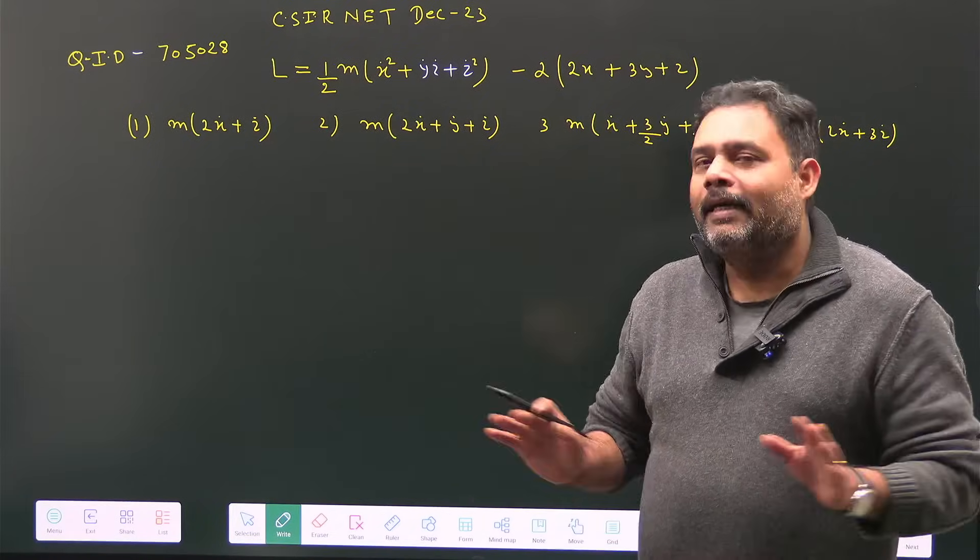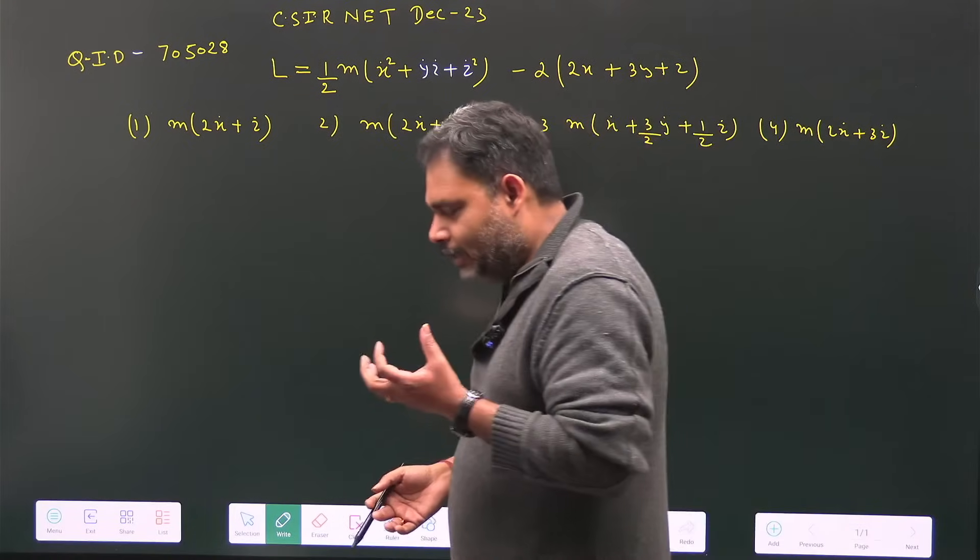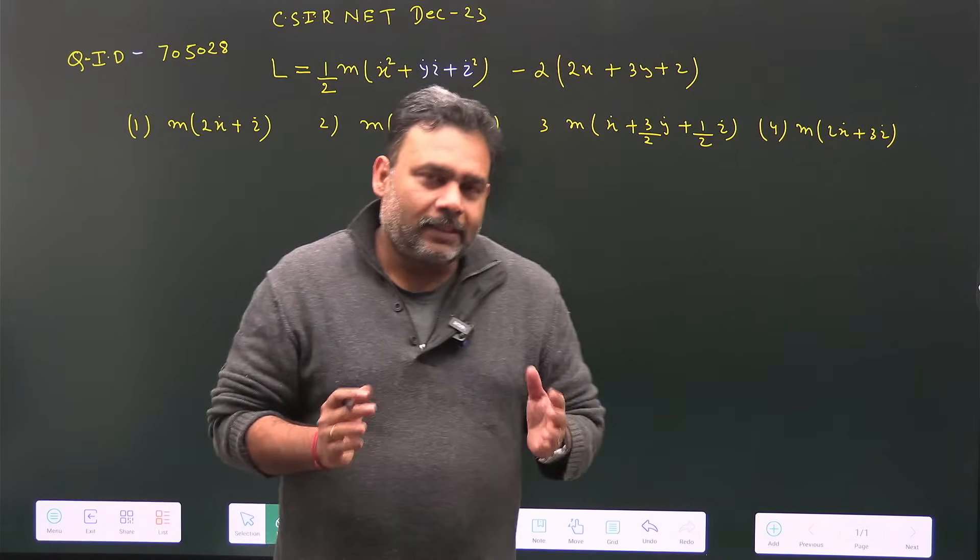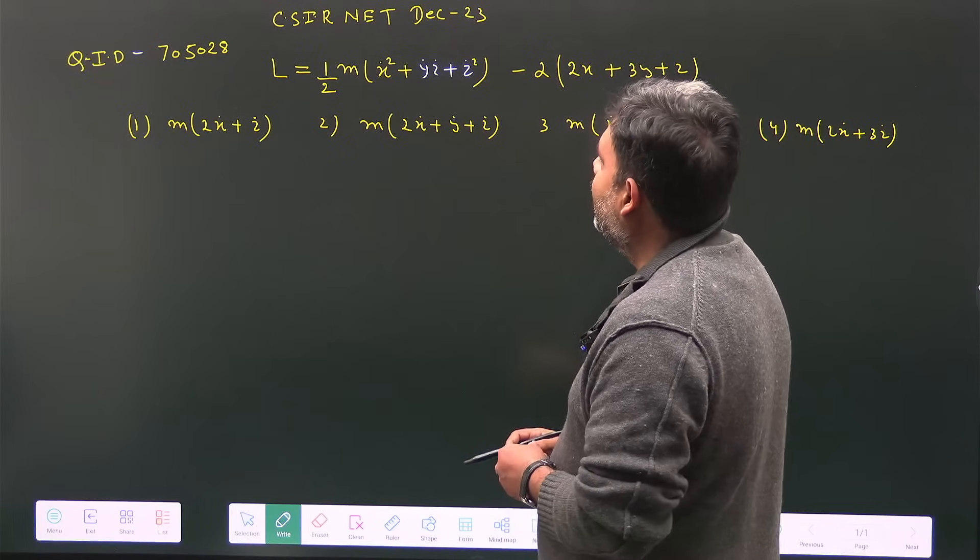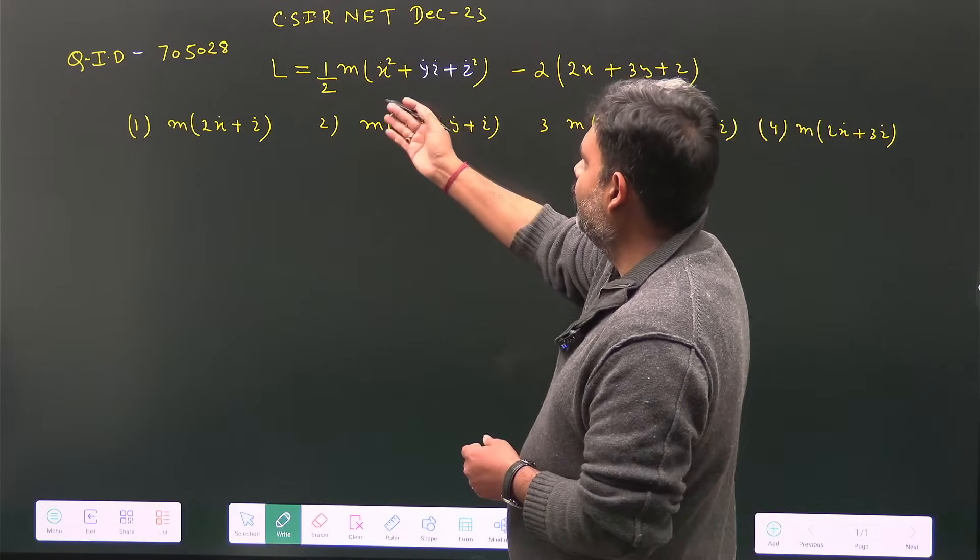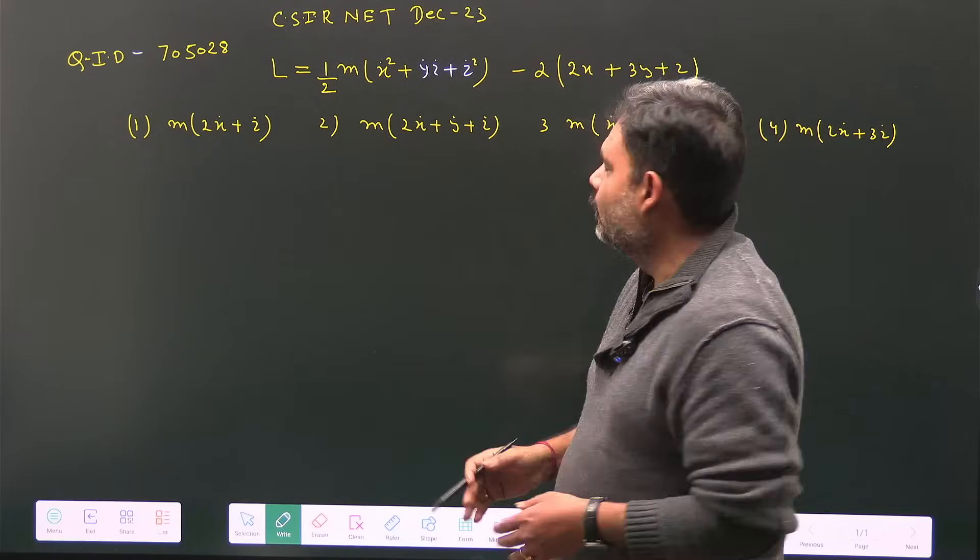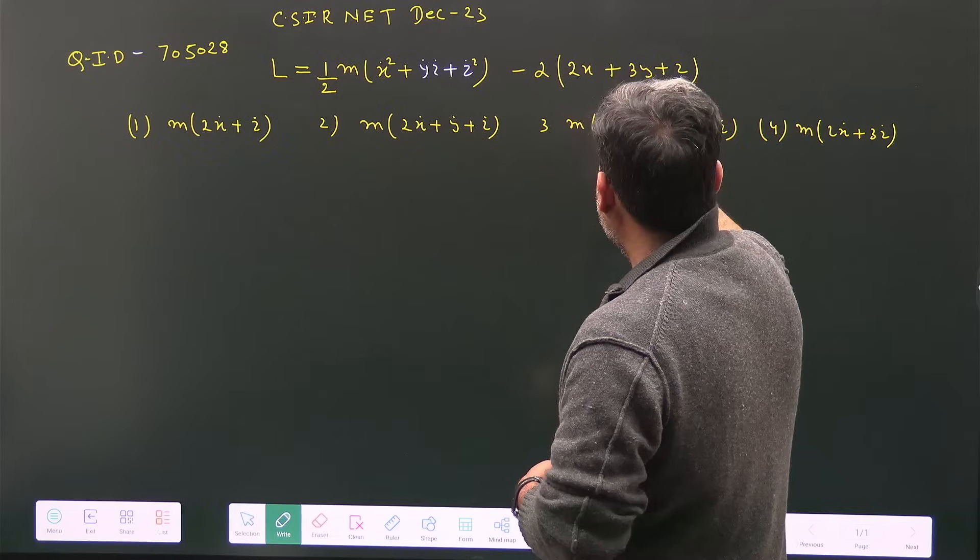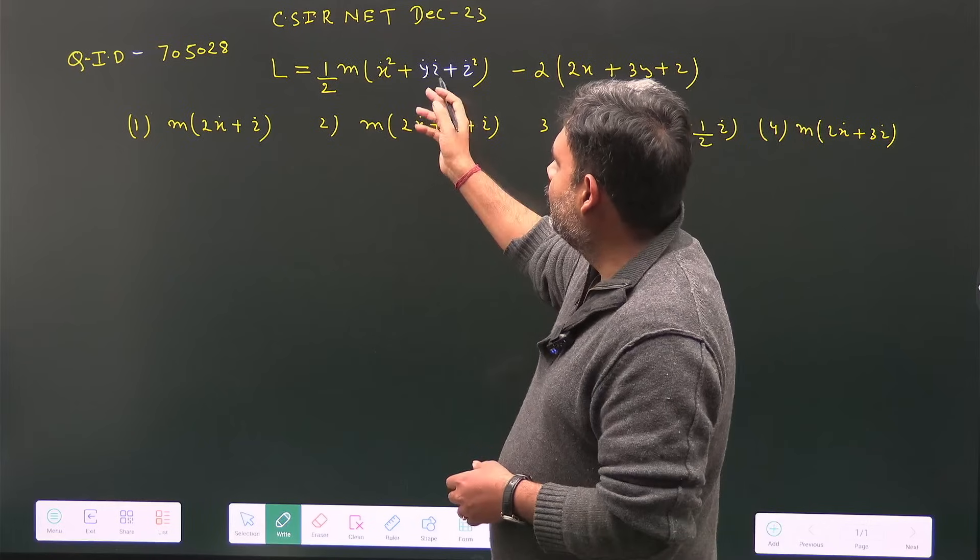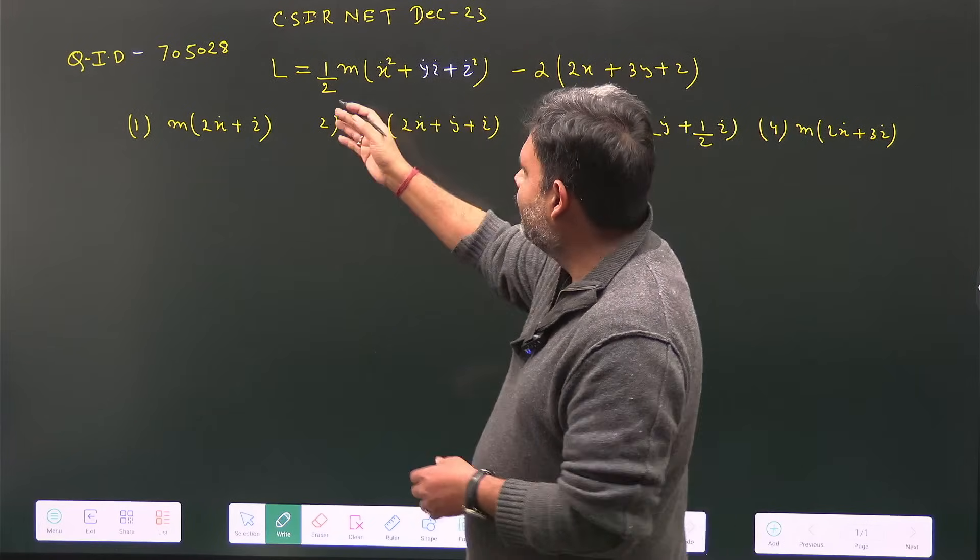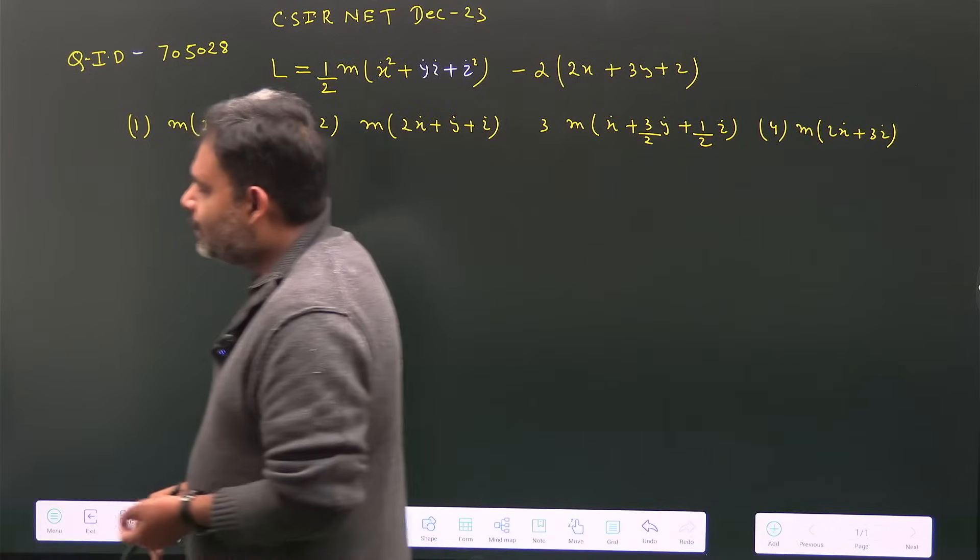This is a really nice problem that shows how much power classical mechanics has. A Lagrangian is given where the potential energy part is linear in generalized coordinates: 2x + 3y + z. The kinetic energy part has a coupling term y dot z dot, with kinetic energy being (1/2)m(x dot² + y dot z dot + z dot²). The question asks which of the following is a constant of motion or conserved momentum.